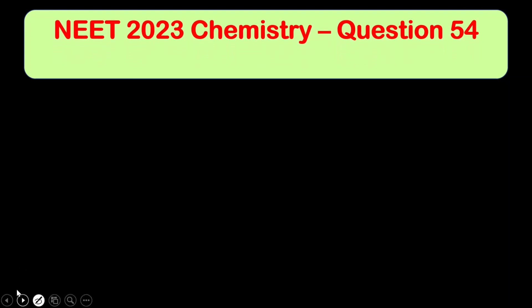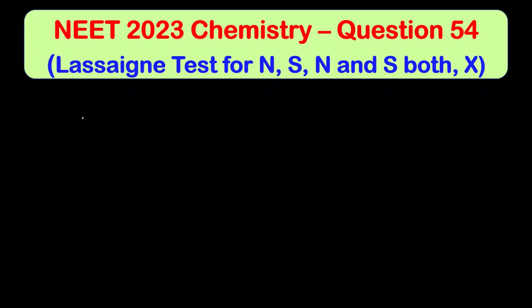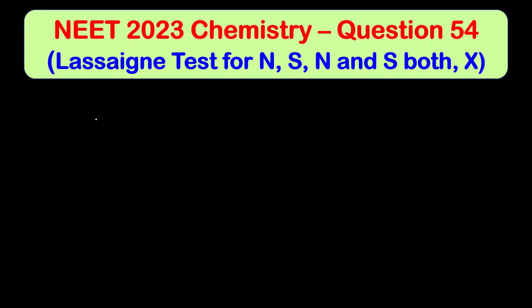Hello everyone, welcome to Chemison Complete Chemistry. In today's video we are going to solve question 54 of the NEET 2023 chemistry section. It is based on Lassaigne's test for nitrogen. We will see the detection of nitrogen, detection of only sulfur, detection of both nitrogen and sulfur, and last is halogens — that is chlorine, bromine, and iodine.